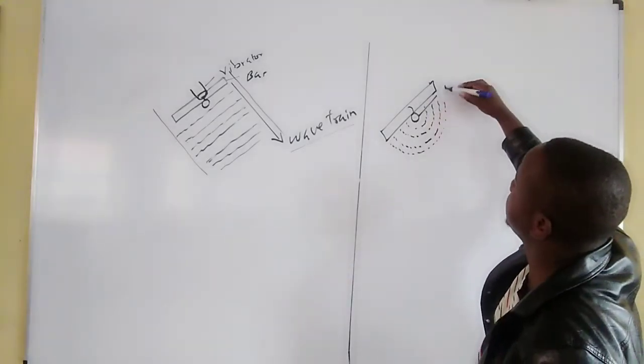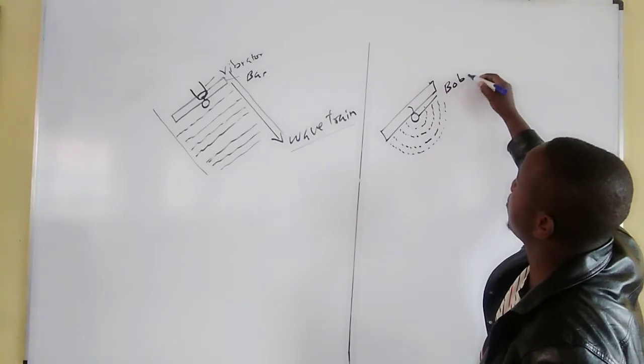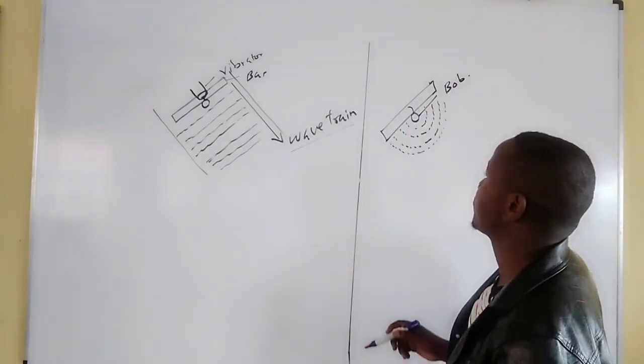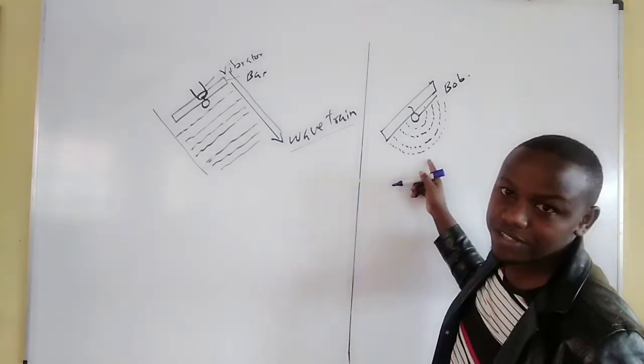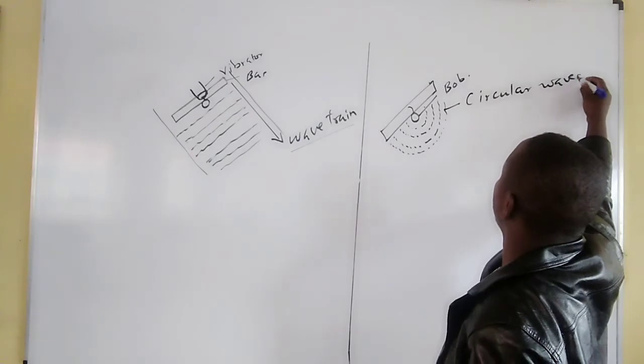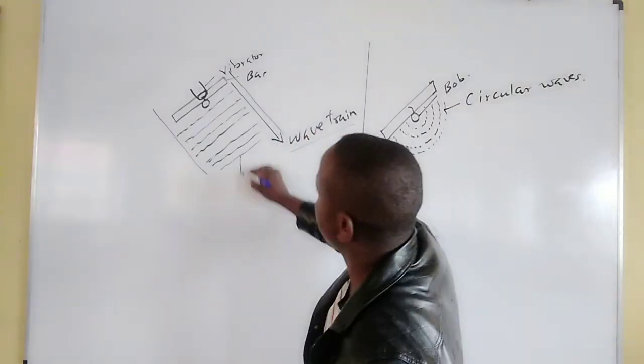Therefore when a circular bob gets placed on this straight bar, the waves get produced. These are circular waves. These are plain waves.